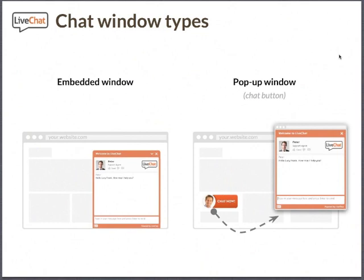There are two types of the chat window upon implementation. One is the embedded chat window on the left-hand side here, which follows your visitor around your website regardless of pages browsed or scrolling — it's always present and available. Another option is a pop-up chat window, shown here on the right-hand side, which can be initiated by a chat button located somewhere in a visible position within your site.